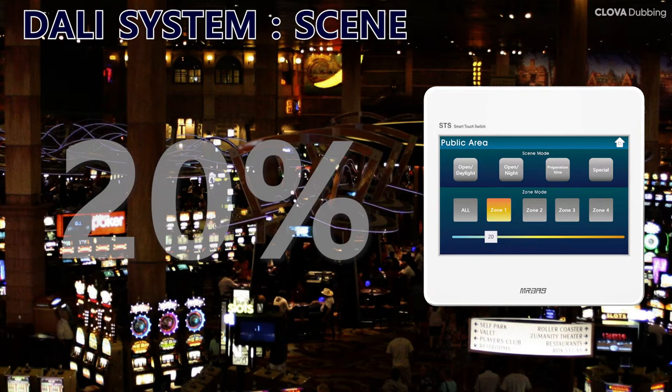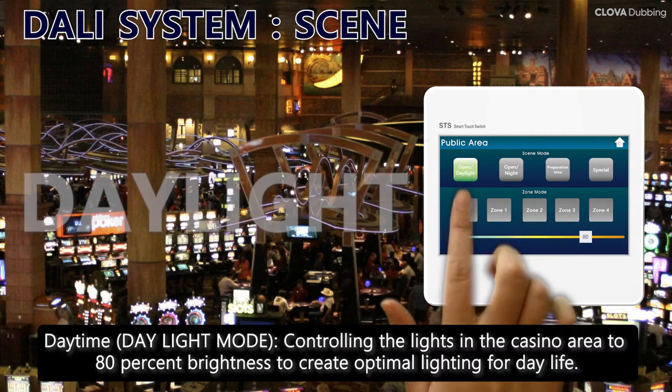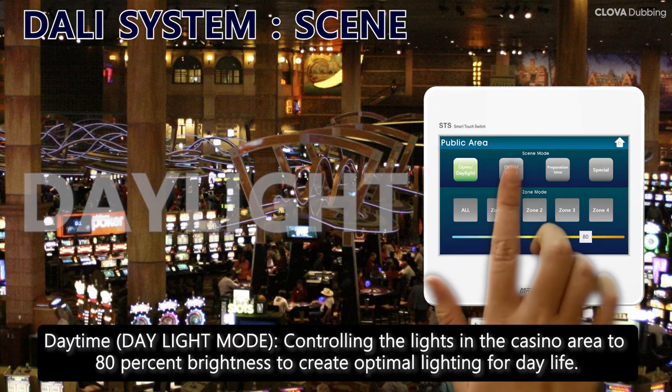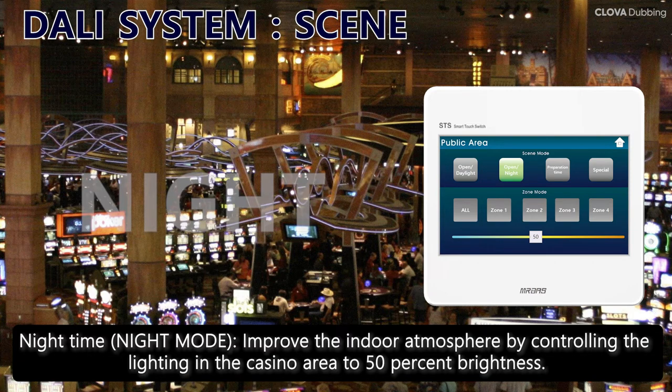You can specify a scene direction mode to create a scene that fits each situation. In this video, four scenes are set up to create different scenes for each situation. The first is Open Daylight mode — this mode is for daytime and controls the lighting in the casino area to 80% brightness to create optimal lighting for everyday use.